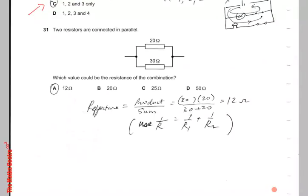31. Two resistors are connected in parallel, which value would be the resistance of the combination?